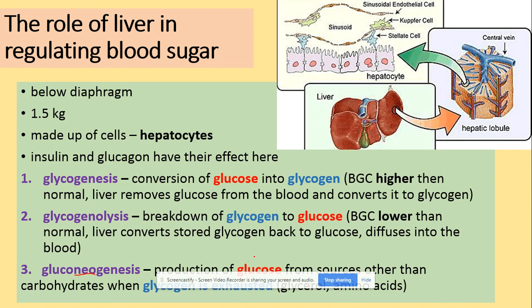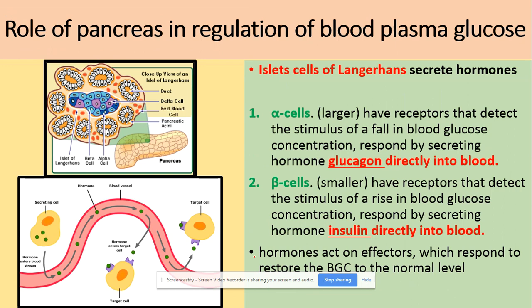Another organ to consider is the pancreas, which has specific cells — the islets of Langerhans. These secrete the hormones glucagon and insulin. Alpha cells secrete glucagon directly into blood plasma, which binds to receptor proteins on the target cells of the liver. Beta cells detect an increase in blood glucose concentration and respond to this stimulus by secreting the hormone insulin, which is also released directly into the blood and binds to receptor proteins on the liver.